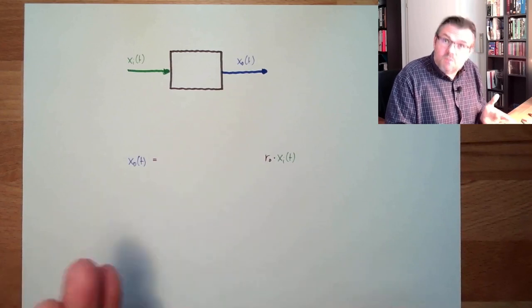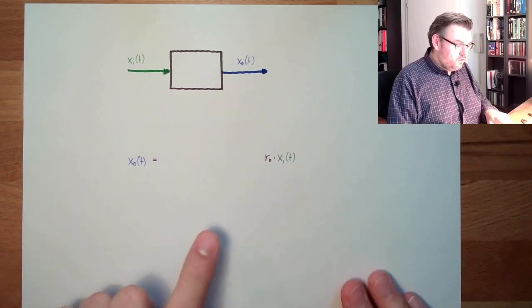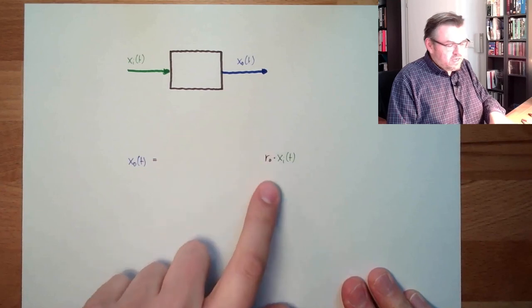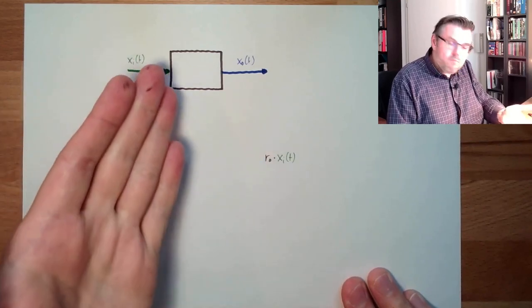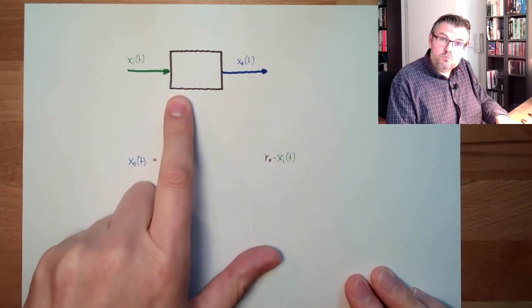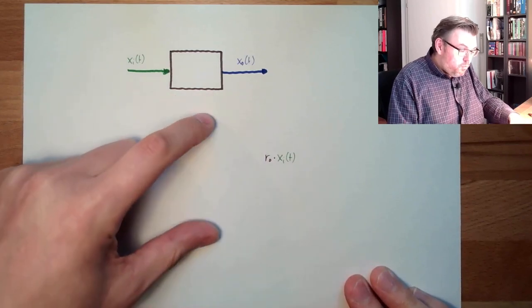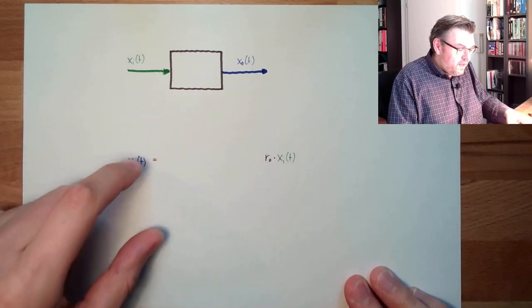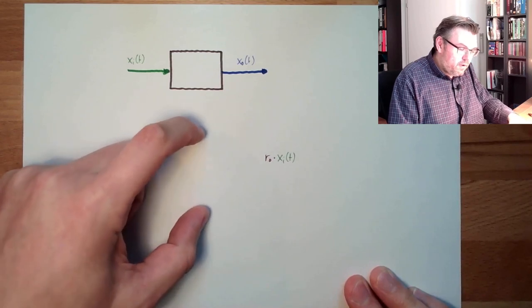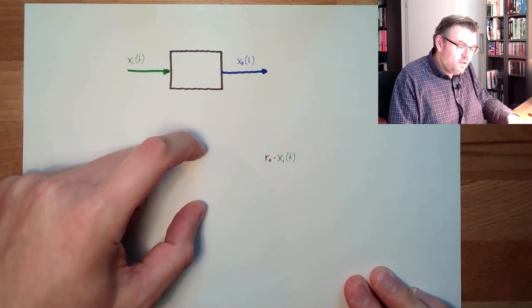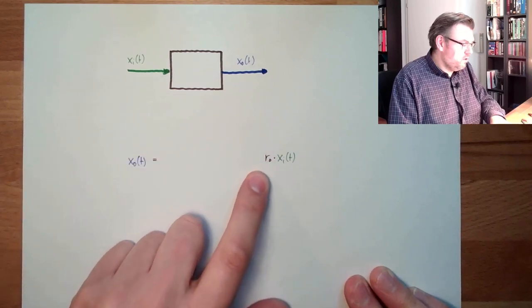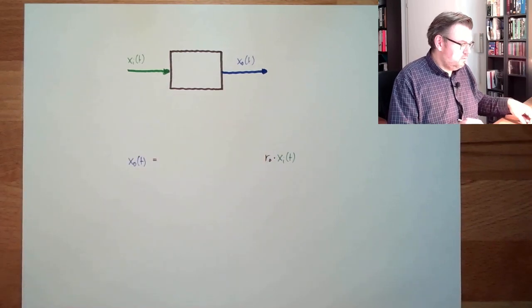This would be one possibility — that the output is the input, but scaled by some factor. Maybe this is an amplifier, something like this. Or maybe this is a spring — if I compress the spring and the output is the force of the spring, the more I compress the spring the more force I have. And this would then be the spring constant here, this r0.